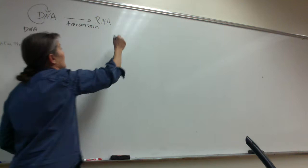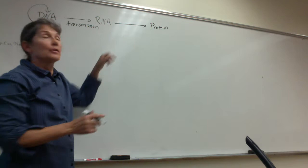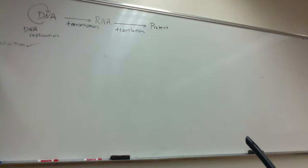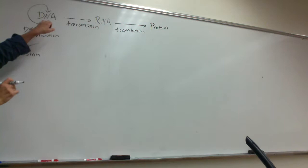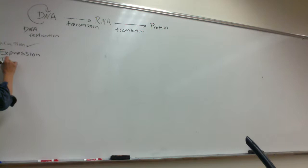Then the RNA will act as a guide to make proteins — enzymes, transport proteins, proteins for motility. What's that process called? Translation. So we're going to call this two-step process gene expression — how information encoded in DNA gets transcribed and translated into the amino acid sequence of proteins. The first step is transcription, the second step is translation.